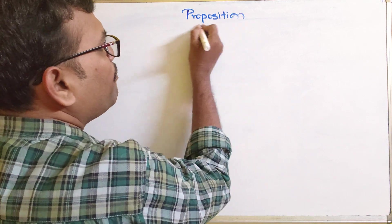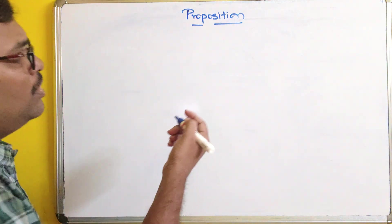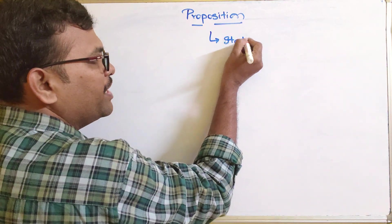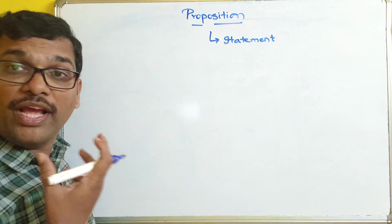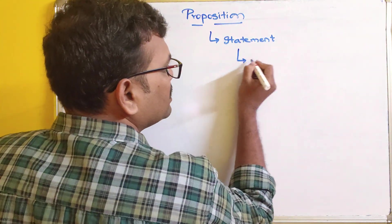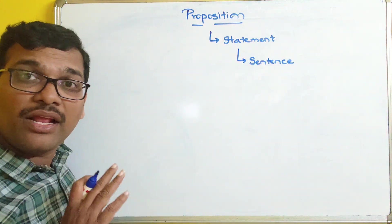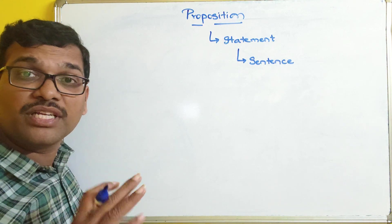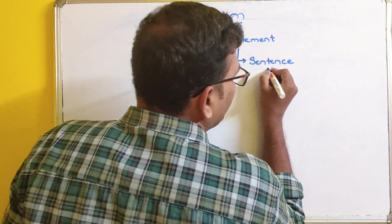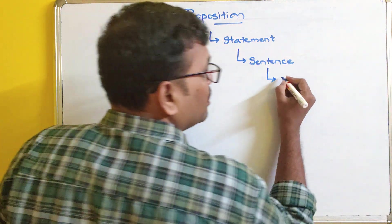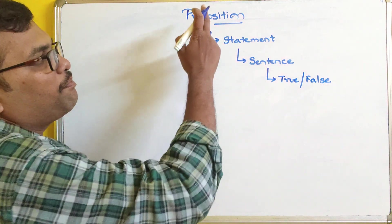So we can call it as a proposition, or propositional logic, or propositional statement. This proposition is also called as a statement. And we know that a statement means it can be a sentence. So every sentence cannot be a proposition — only a few sentences can be called as a proposition. The sentences which can have a result of true or false are called as propositional statements.